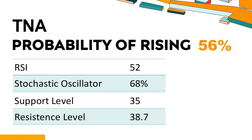What technical factors should you consider when analyzing TNA? Technical Signals and Analysis: TNA's 14-Day RSI value was 52. When the RSI is between 50 and 70, it generally indicates the stock is moderately bullish, meaning the price has been rising but has not yet reached overbought levels. The current stochastic oscillator of TNA is 68%. When the stochastic oscillator stays between 50 and 80, it may indicate a mild downtrend with some selling pressure, and an oversold signal could indicate a potential buying opportunity.